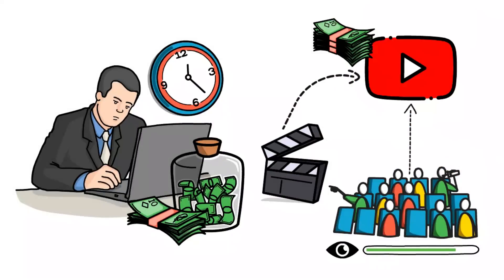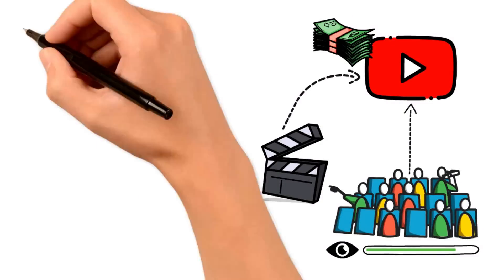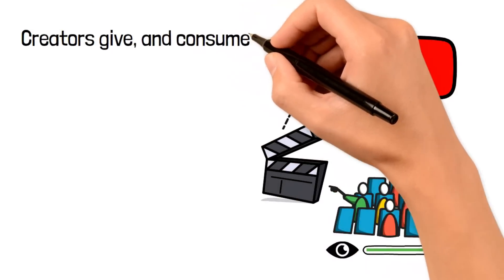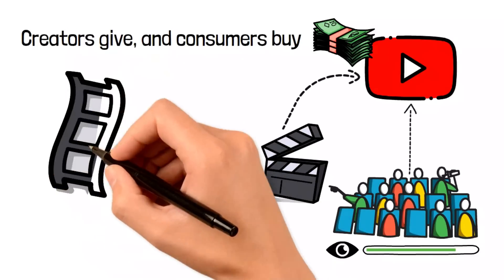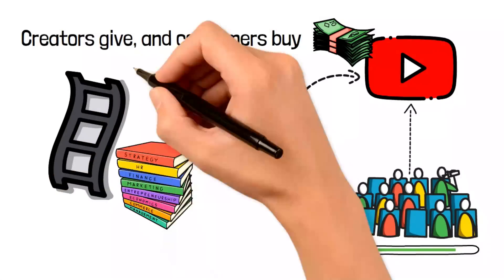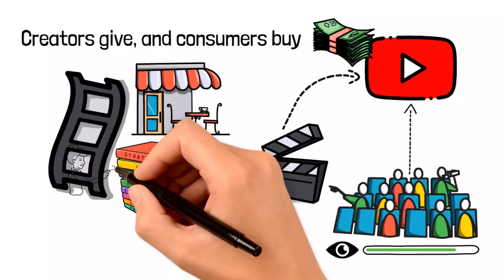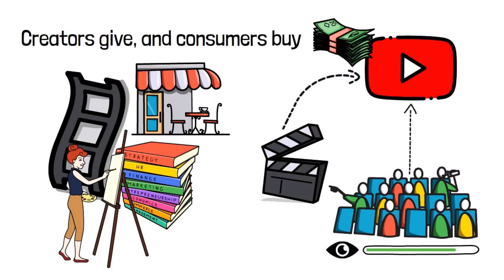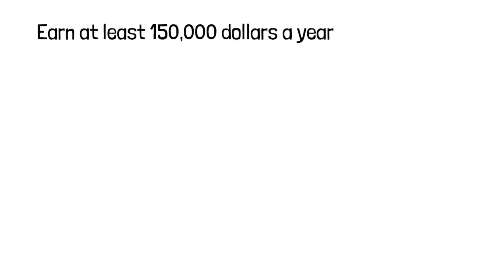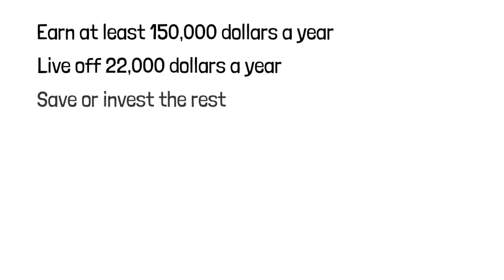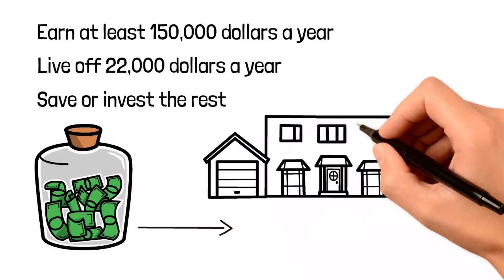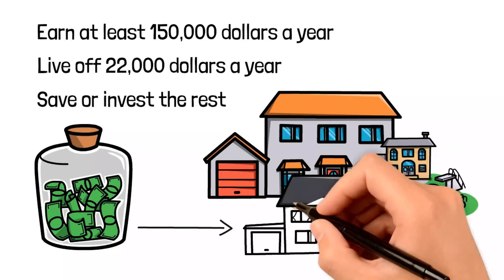Another hot tip I'll give you is to think like a creator and not like a consumer. Creators give and consumers buy. So start giving. Create your own videos, write your own ebooks, and start your own business. Start building value no matter how small. If you're hell-bent on retiring in 10 years, here's my financial advice. Earn at least $150,000 a year. Live off of $22,000 a year. Save or invest the rest. In 10 years, you'll be thanking me. Real estate is a good investment to boost your earnings even further and reach your retirement goal even faster.